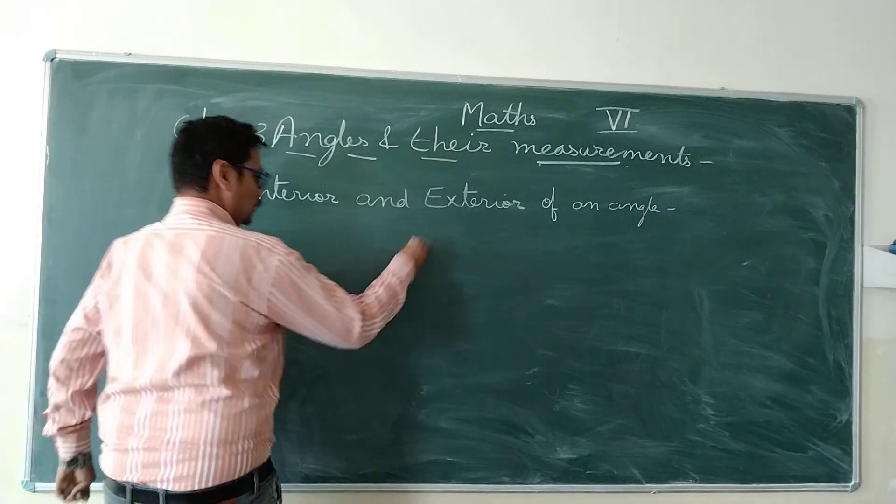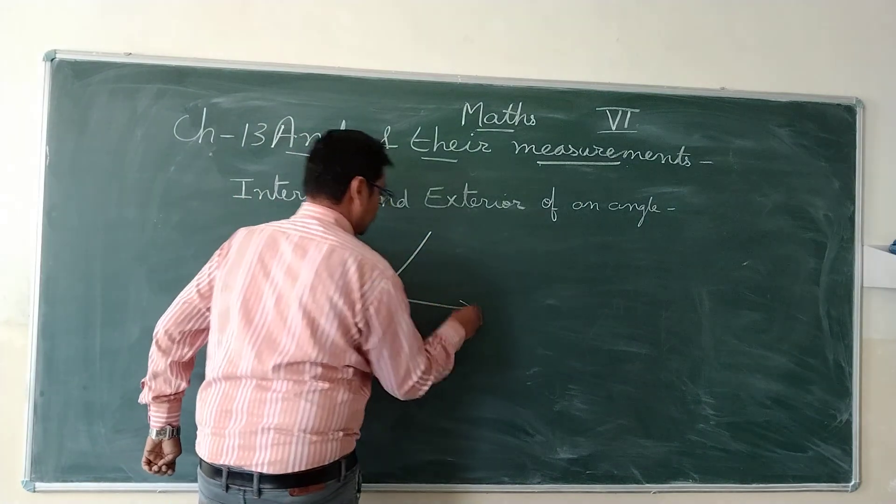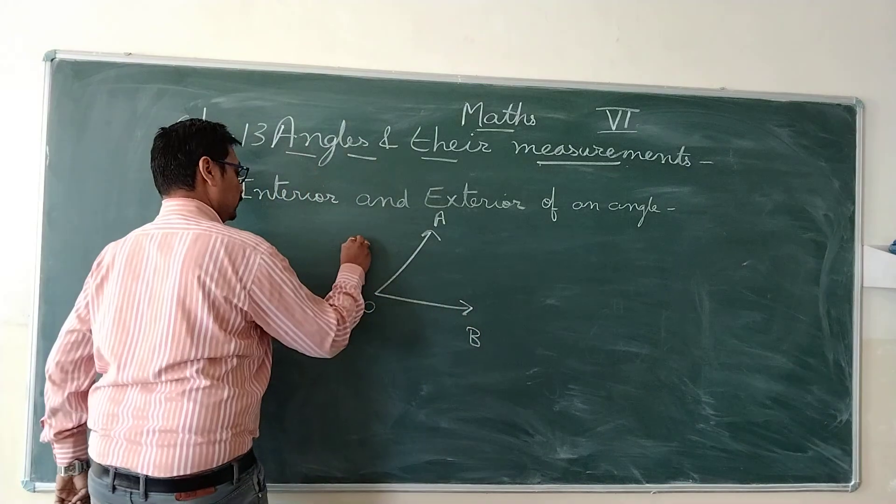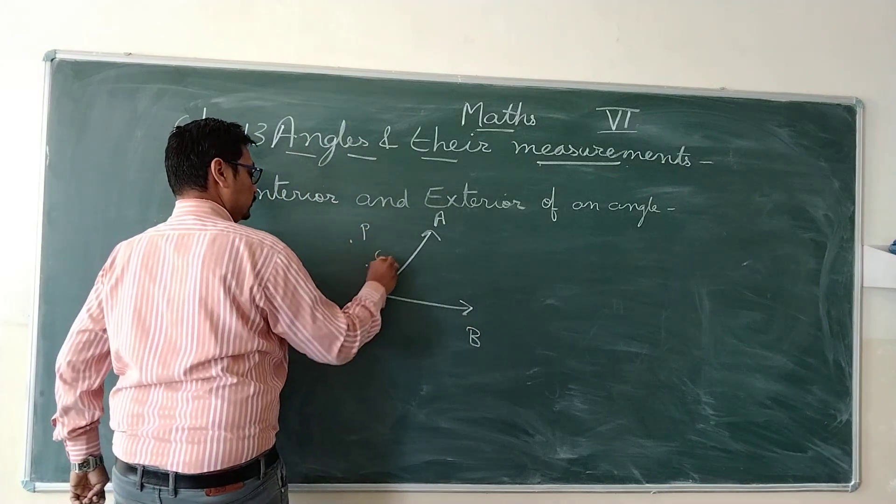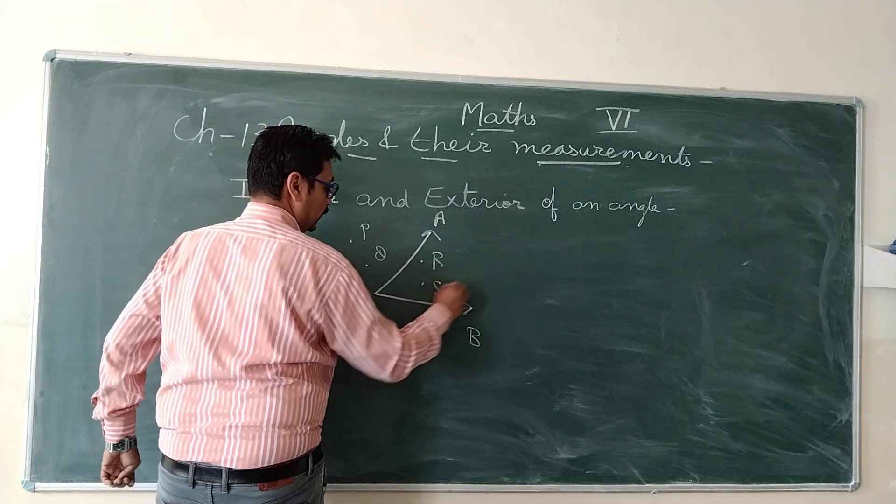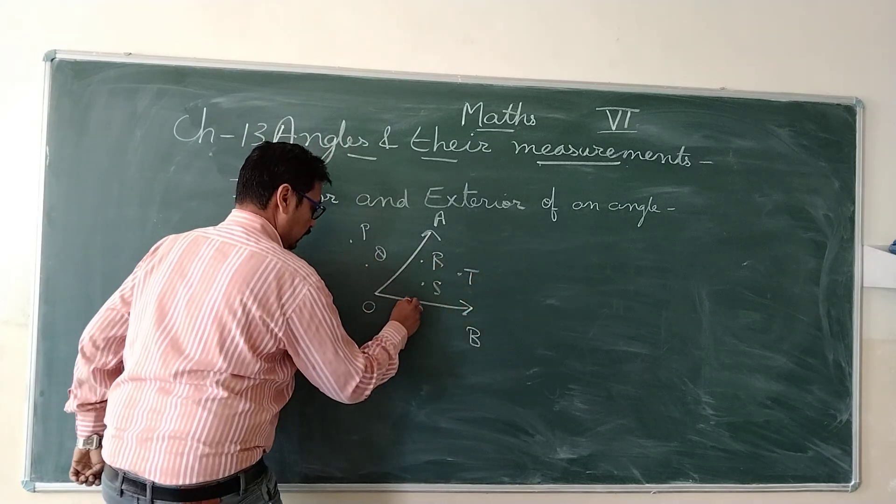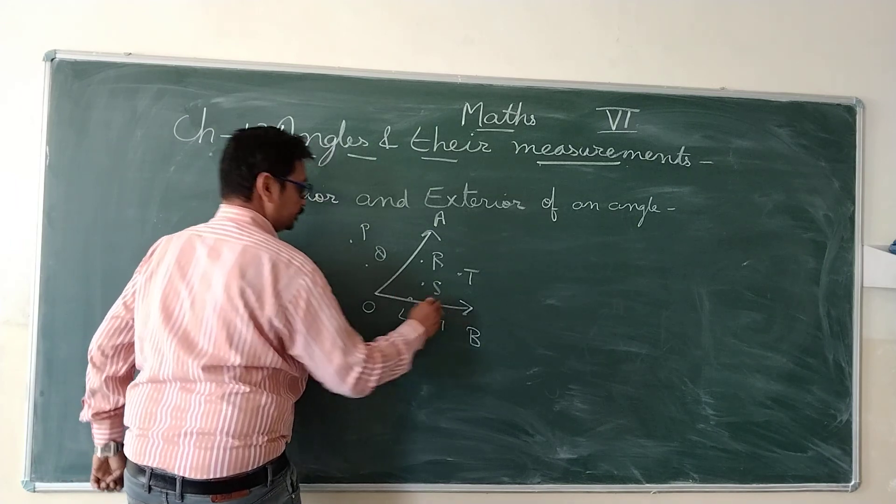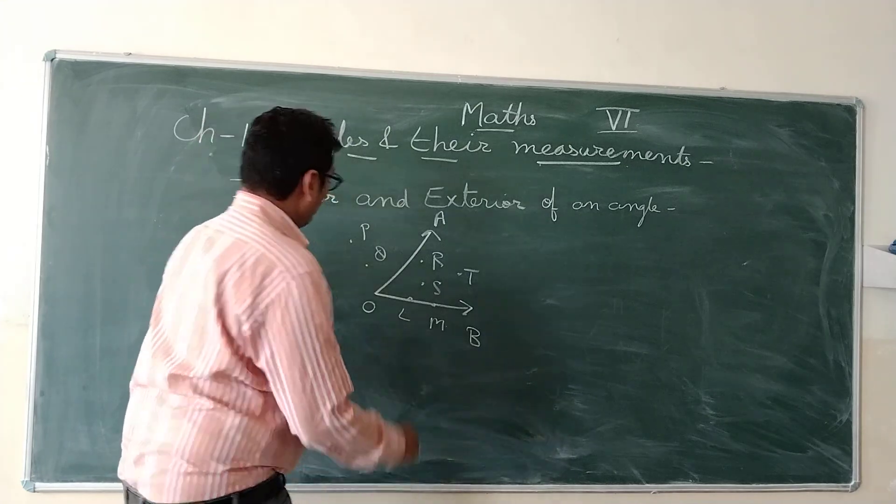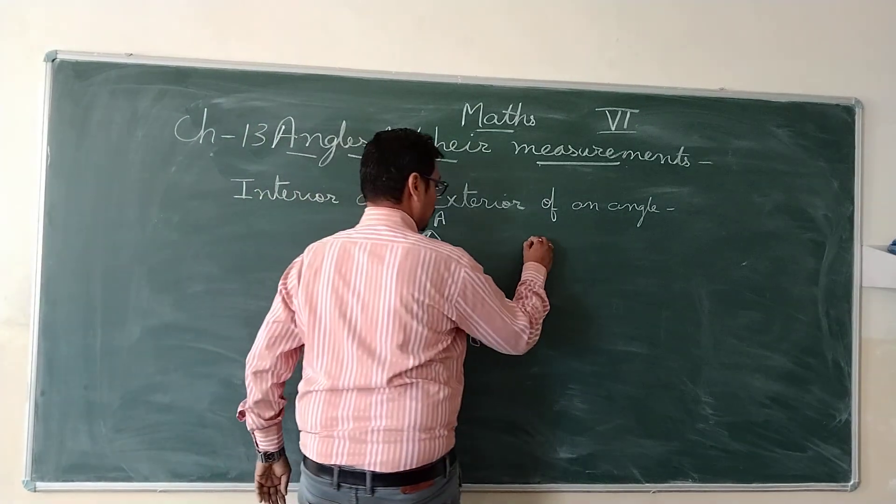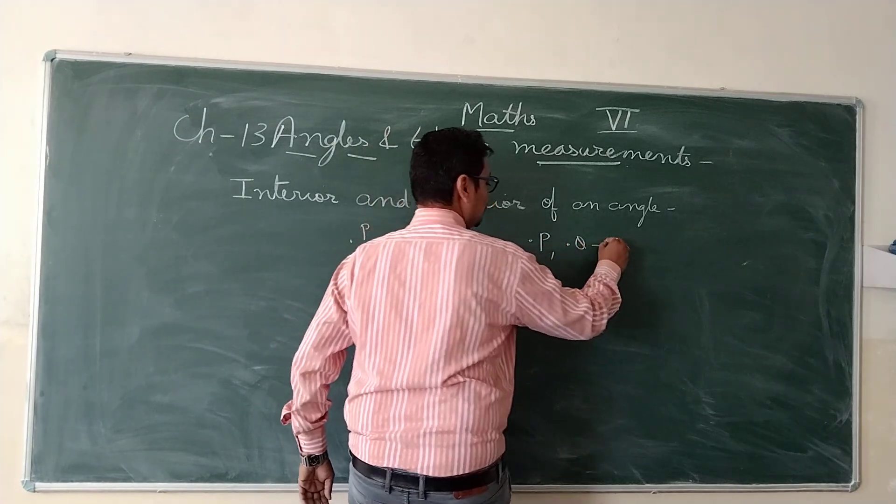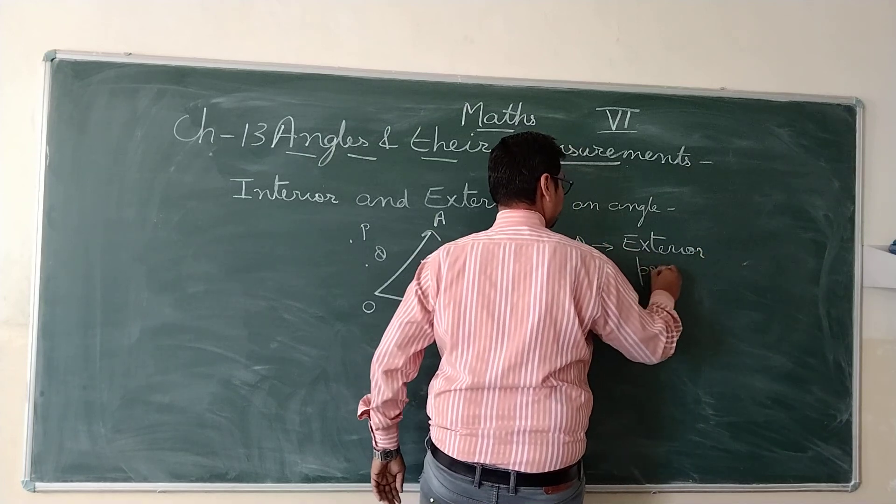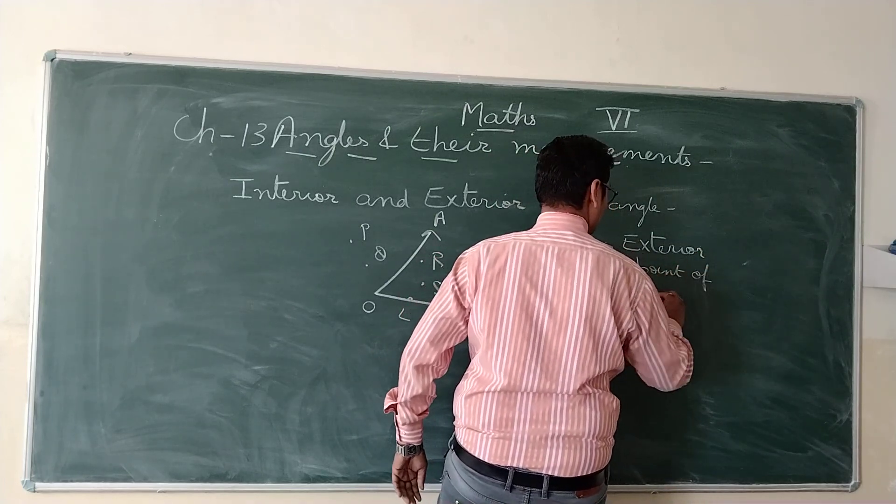Interior and exterior of an angle. Suppose we are having an angle A, O and P. There is the point P, Q, R, S, T, L, M. So the points which are lying outside the angle - what? Point P and point Q. They both are exterior points of an angle.